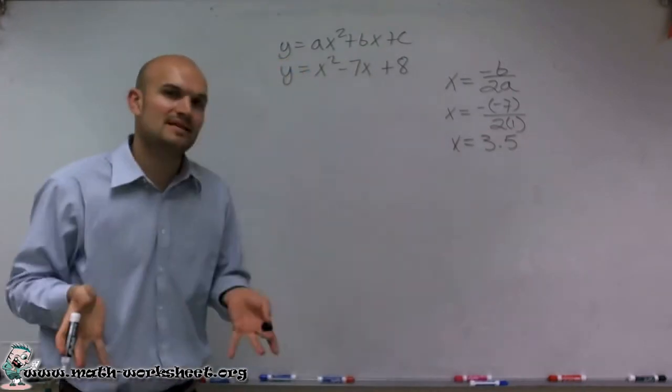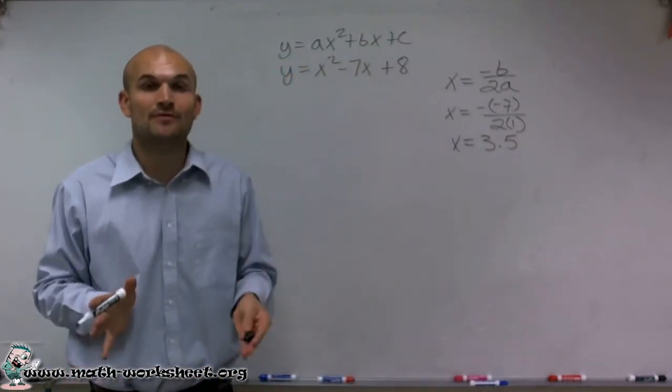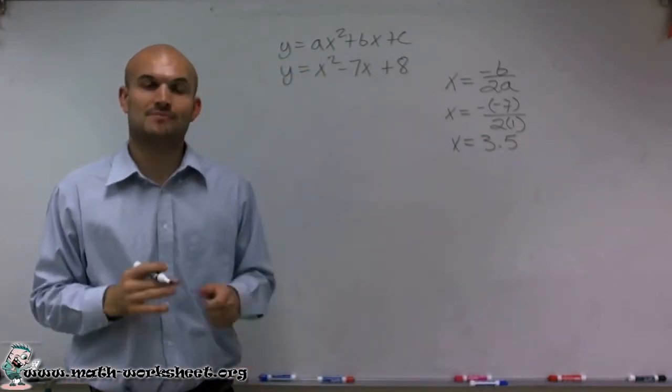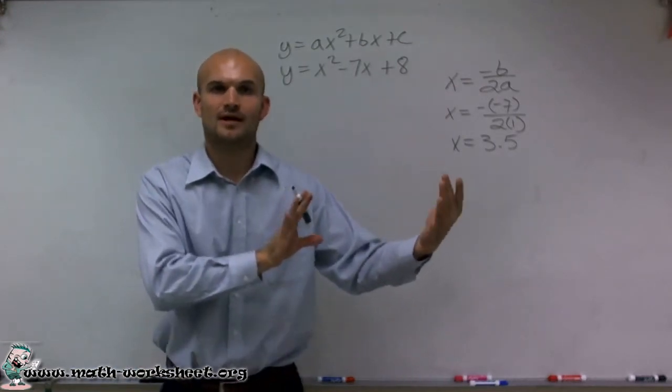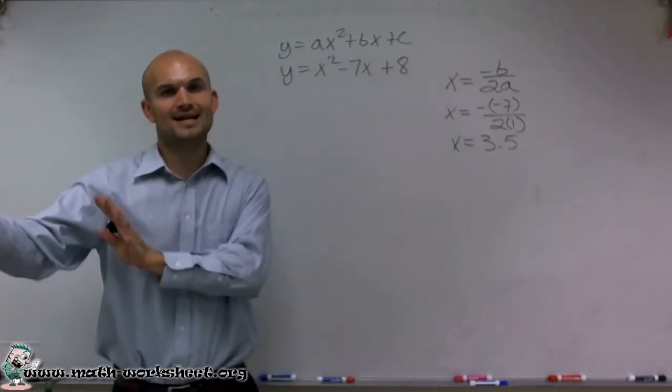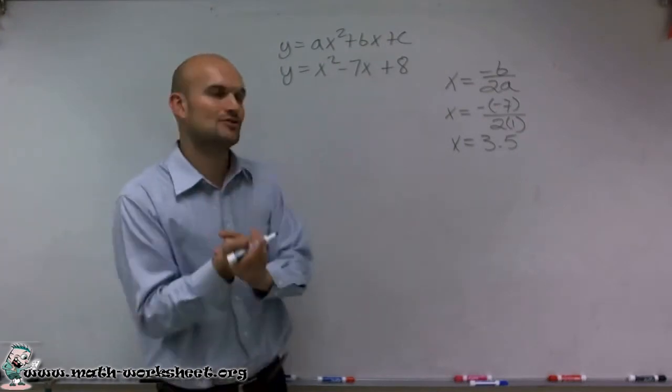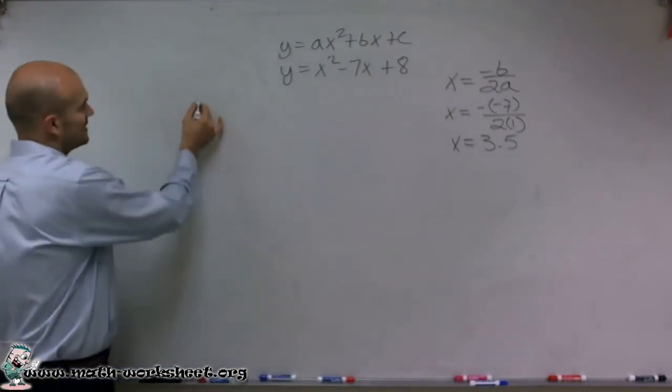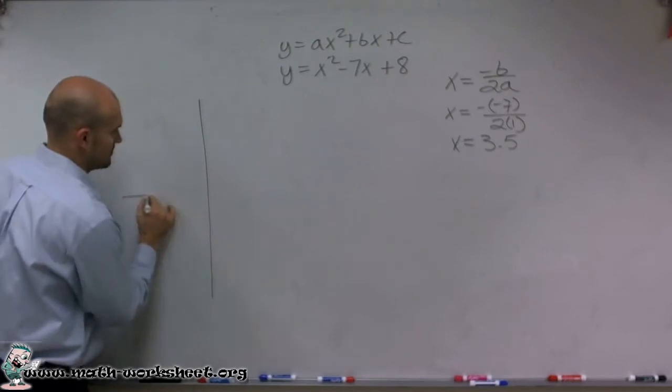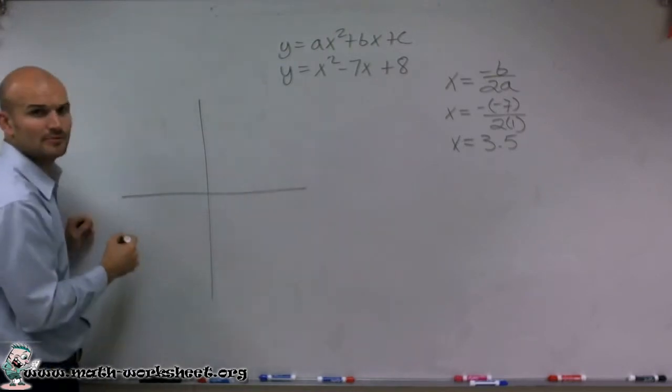That means my graph is symmetrical about the line 3.5, meaning all the points that are on the left of 3.5, if I put them over on the right-hand side, they're going to be exactly symmetrical about this line.